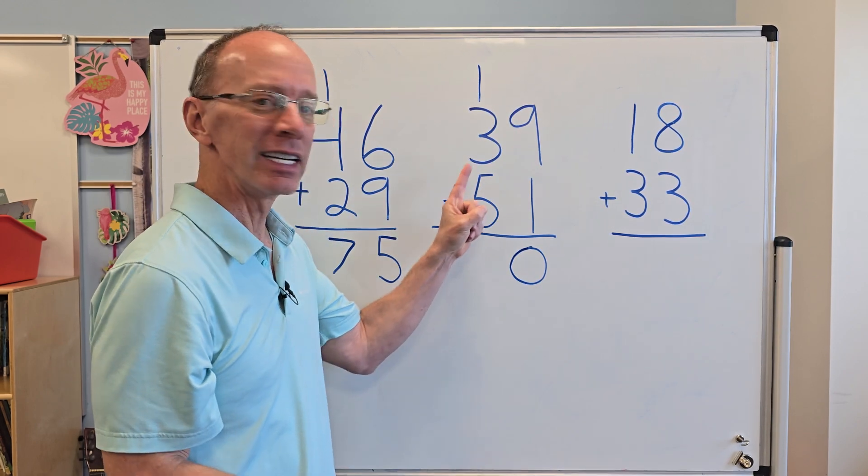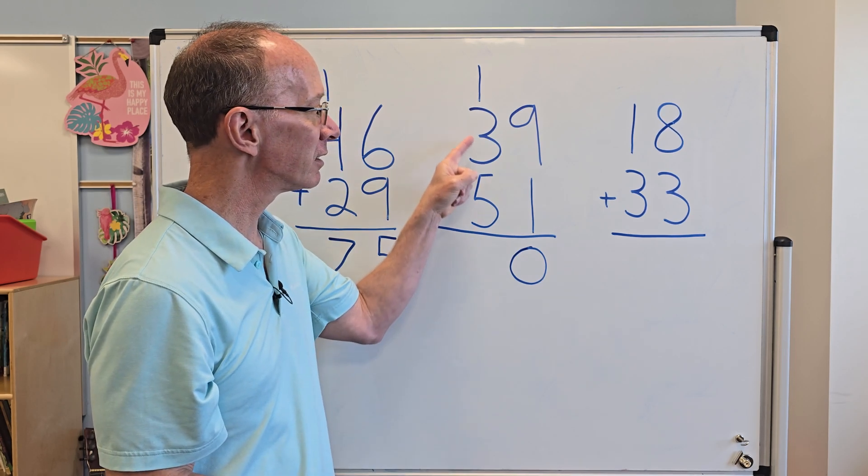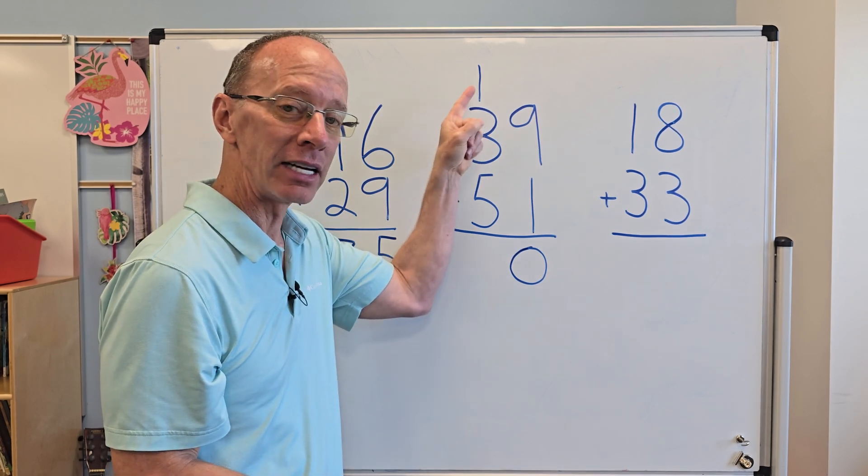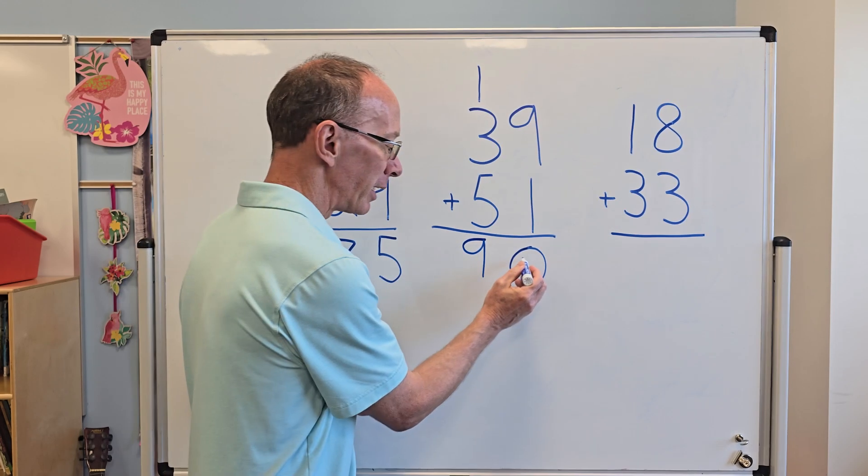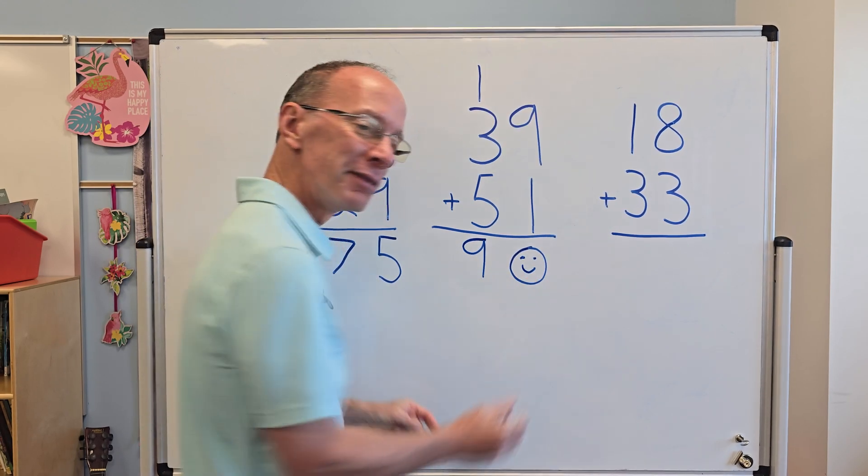So now I go ahead and add the tens. So I go five, six, seven, eight, nine. All right, so put the nine right here. And if you want to, you can put a little smiley face on that zero there. Brighten your day.